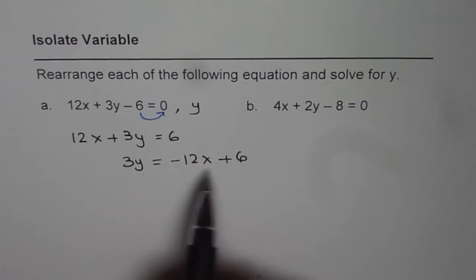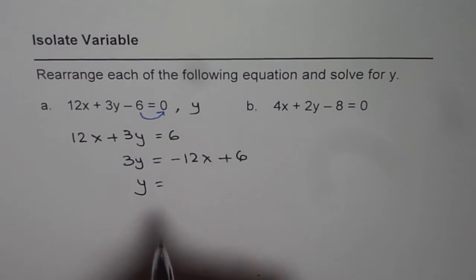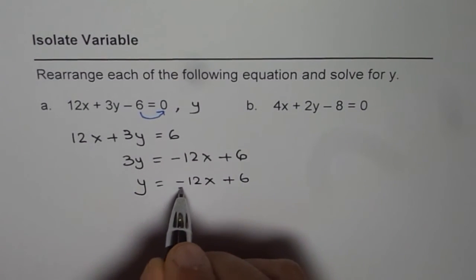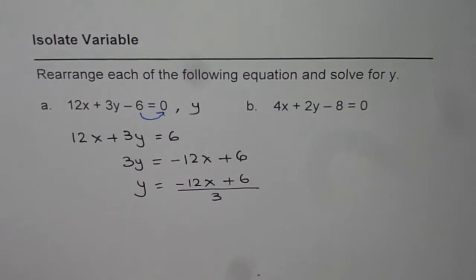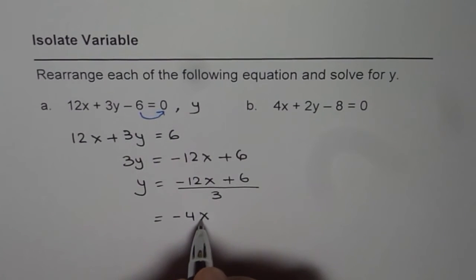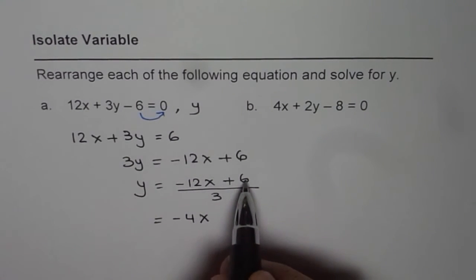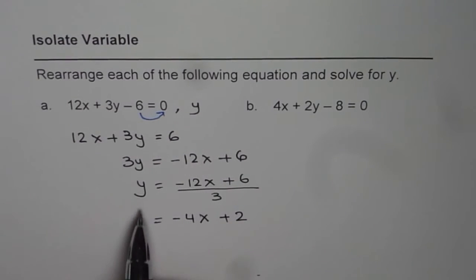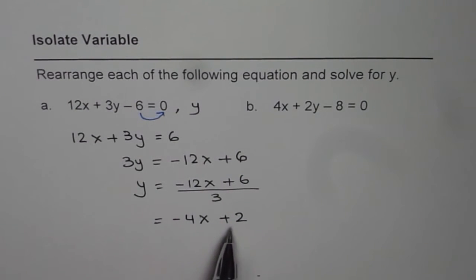If I divide by 3 on both sides, I get y equals minus 12x plus 6, divided by 3. I could write this as minus 12 divided by 3, which is minus 4, so it gets minus 4x. And on this side, 6 divided by 3 leaves us with 2. So y equals minus 4x plus 2 is our answer.